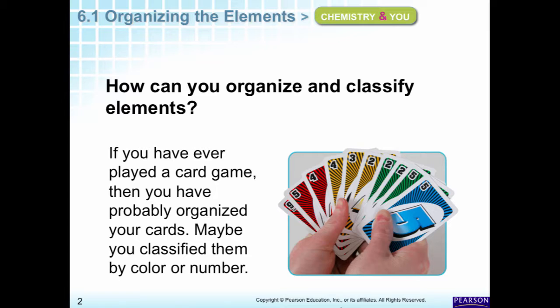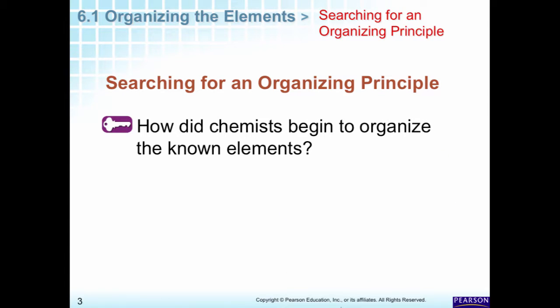Just like we organize our cards when we're playing a game, we actually organize the elements. So you can think of this as classification. This is something that we do normally as human beings. In biology, you classify the animals and plants into phylum and things like that. Now, as I said, we're going to talk a little bit about history and how chemists started organizing the elements.